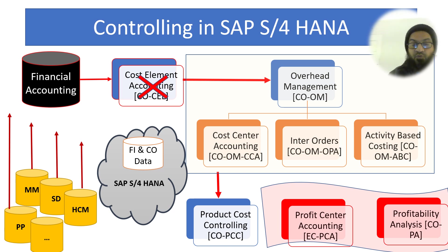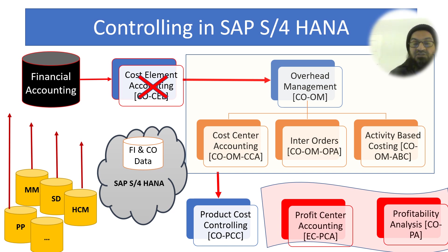For the sake of compatibility with earlier vocabulary, SAP has still retained Cost Element Accounting terminology in its new interfaces and manuals. One important point: only expense and revenue data flows from Financial Accounting to the Controlling module. Assets and liabilities are not forwarded — the Controlling module only deals with expenses and revenues.